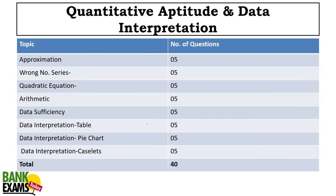In Quantitative Aptitude: approximation was there and was kind of easy. Wrong number series was easy. Quadratic equations, arithmetic, data sufficiency, data interpretation with table, pie chart, and caselet type questions were there. Overall the paper was not tough, though reasoning was time-consuming and quantitative aptitude was also kind of time-consuming.